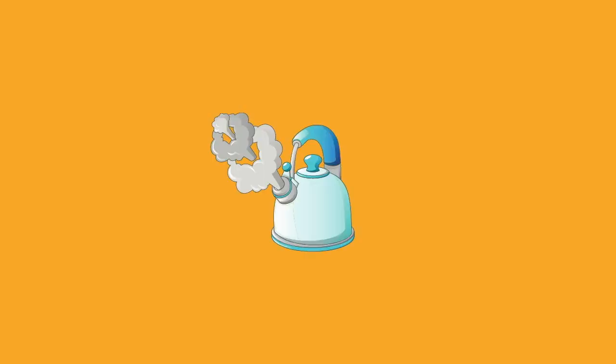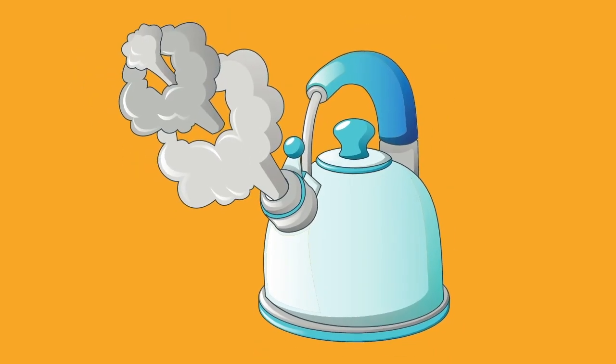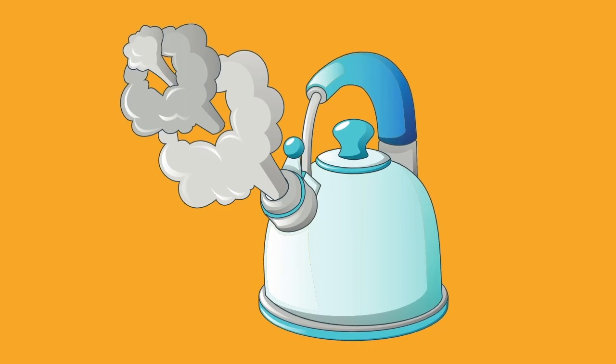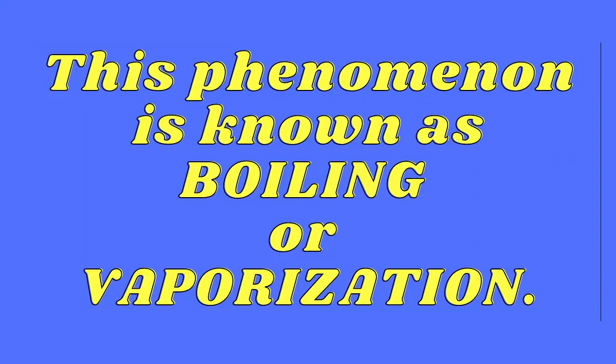Now what is happening in glass three? When we heated the water to a higher temperature, it started boiling and steam started coming out. That means the liquid water started changing into water vapor, which is gas. This phenomenon is known as boiling and vaporization.